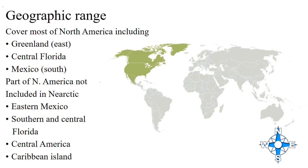First, the geographic range of the region. The Nearctic region is also known as the North American region. The light greenish area on the map represents the Nearctic region. The countries included in the Nearctic region are Greenland — the world's largest island located between the Arctic and Atlantic Ocean.